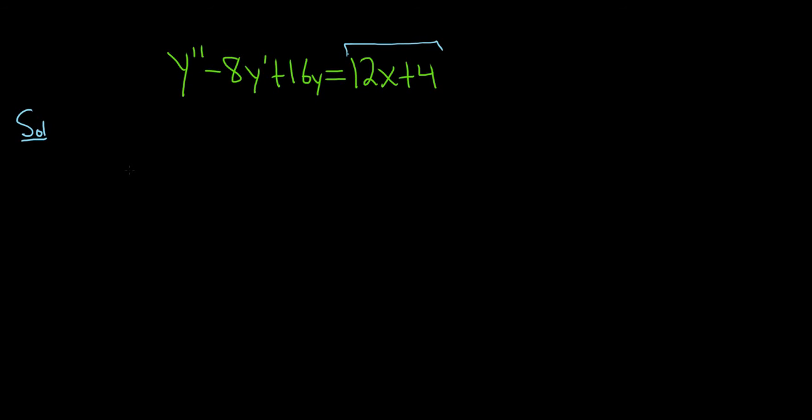The first thing we do is solve the homogeneous equation. So we pretend it's equal to 0, and we solve it. To do that, we start by writing down the characteristic equation.